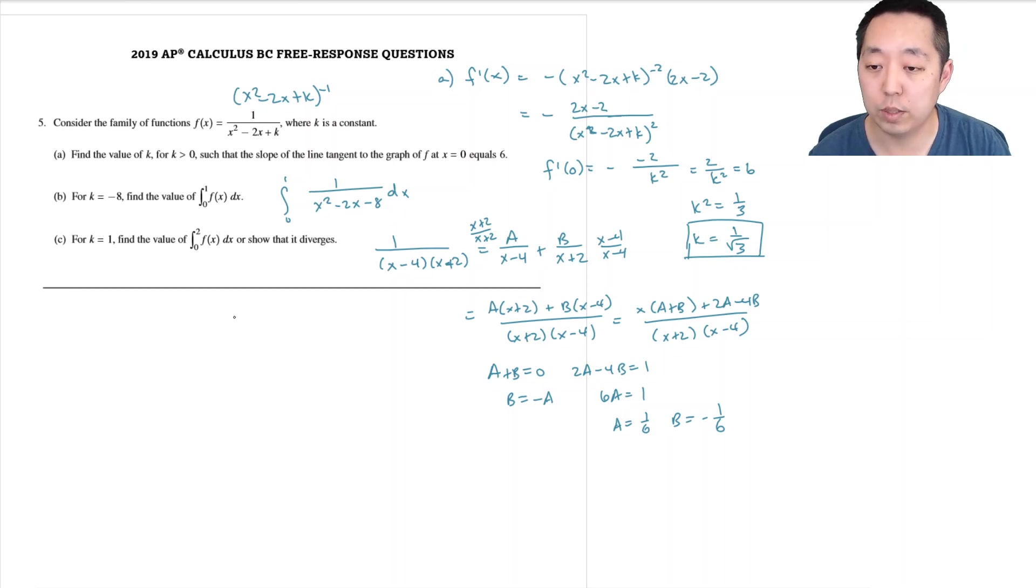So then this ultimately ends up being the integral from 0 to 1 of 1 sixth times 1 over (x minus 4) minus 1 sixth times 1 over (x plus 2). This becomes 1/6 ln|x minus 4|. Don't forget the absolute value signs - they're important.